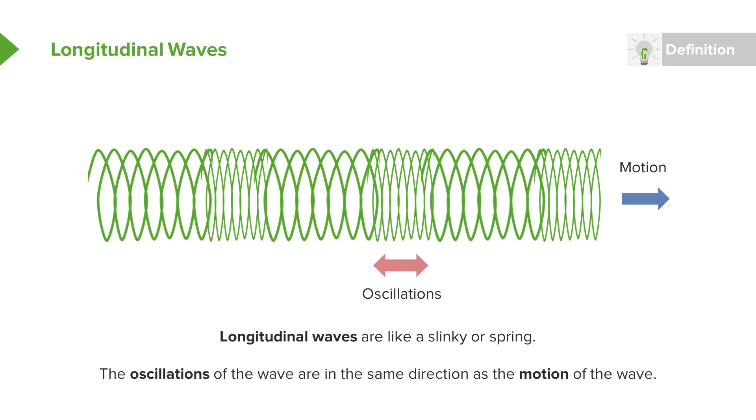So again, think about one point on the spring. It will move left to right. And the entire wave as it's going through the spring is also moving left to right. And this defines a longitudinal wave.